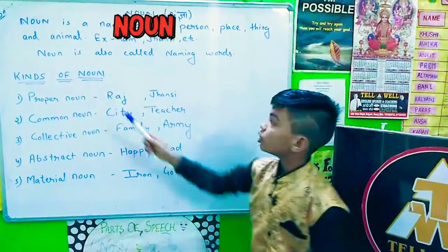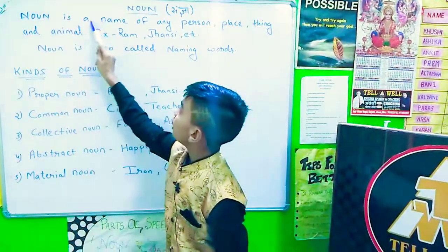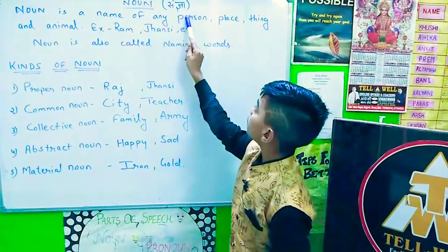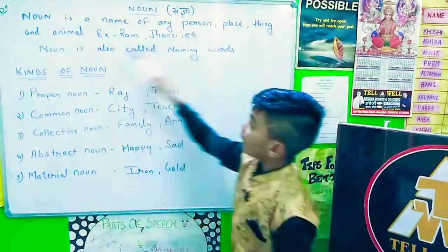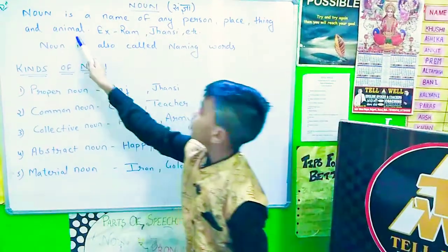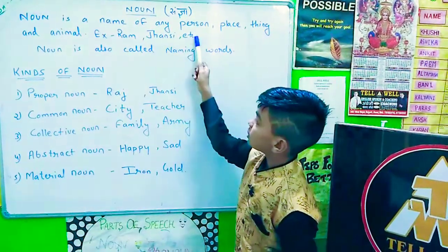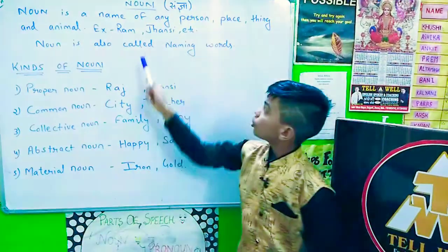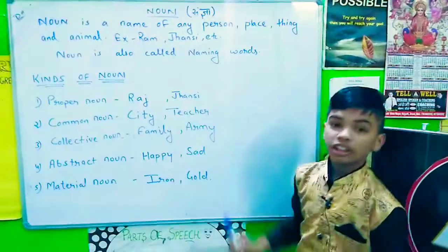What is noun? A noun is a name of any person, place, thing, and animal. For example, Ram, Jhansi, etc. Noun is also called naming words.